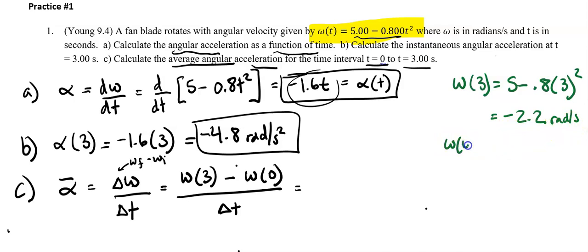So omega(0), let's go ahead and put that in. That's 5 - 0.8 times 0 squared. That's 0, cancels out, and we're left with 5 radians per second.